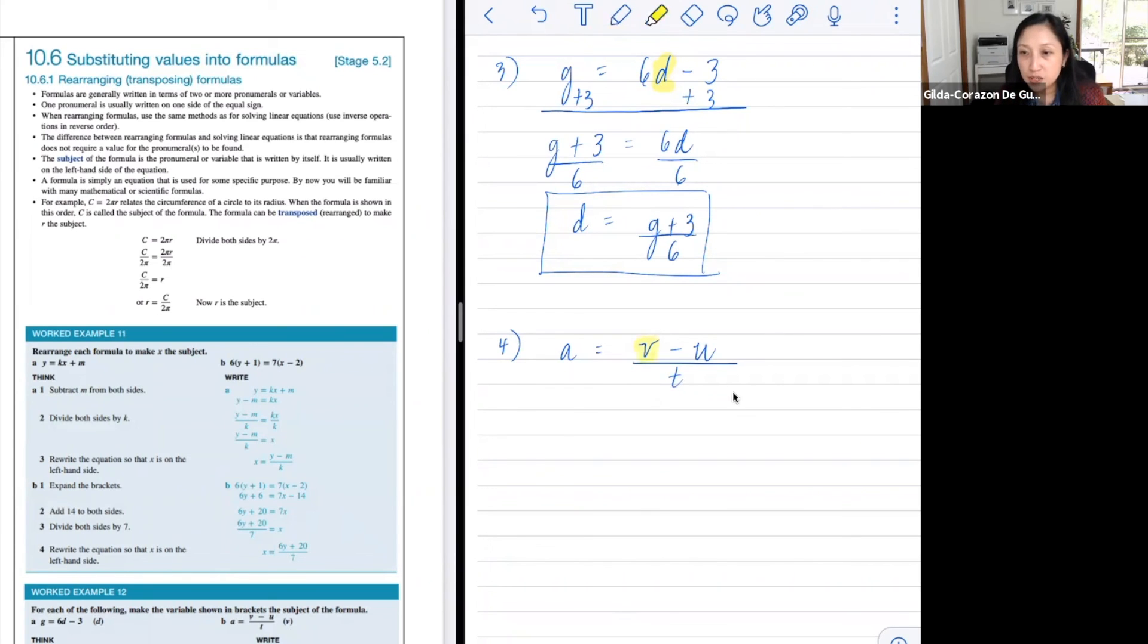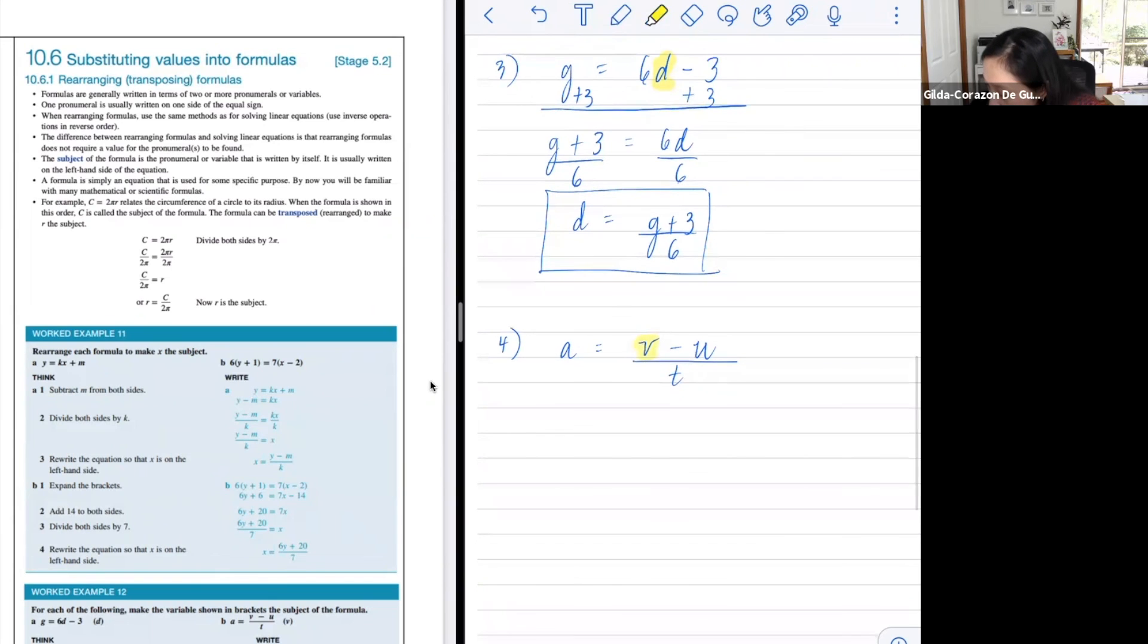So you want to get rid of the t first by multiplying both sides by t. And therefore, so times t, times by t. And so that cancels out. And your left side becomes a times t, or t times a, or just at, equal to v minus u. And you want to get rid of the u by adding u. And we have at plus u equals v, or that it's v equals at plus u.